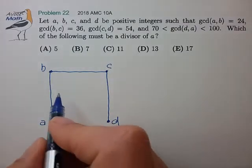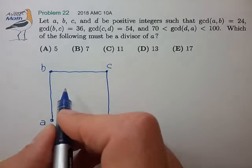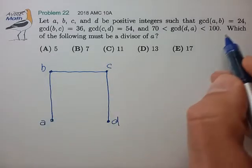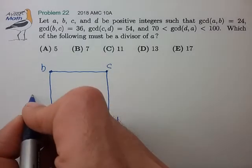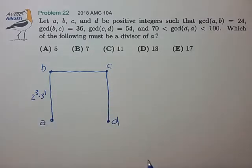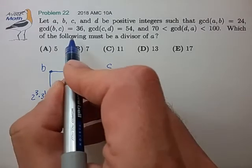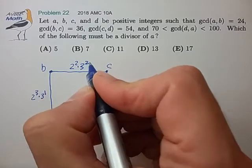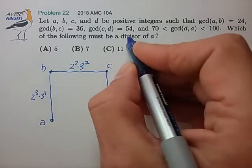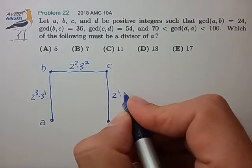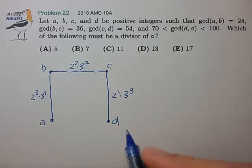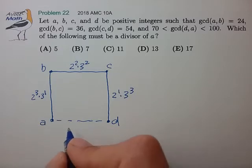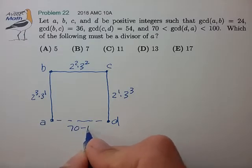And for the lines joining them, we'll note what the greatest common divisor is. So from A to B, the greatest common divisor is 24, that's 2 to the third times 3. From B to C, the common divisor is 36, which is 2 squared times 3 squared. From C to D, 54. And from A to D, we don't know what the greatest common divisor is, but we're told it's in the range of 70 to 100.